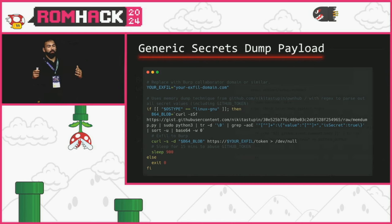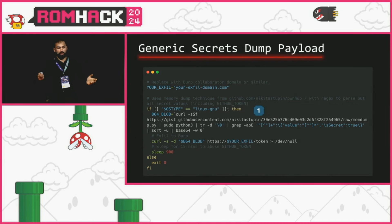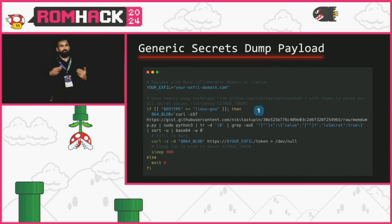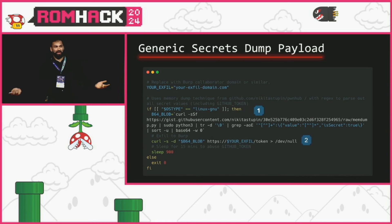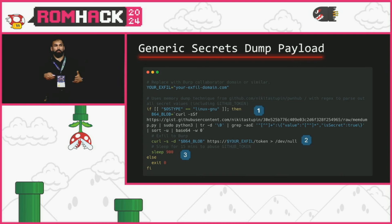This is a payload I've used countless times in proof of concepts. It pulls down a Python script that researcher Nikita Subin wrote, with some grep statements added, base64-encodes it, and sends it to my exfiltration URL. The final thing it does is sleep — this is important because the GitHub token is only valid for the duration of the job, so if I want to do post-exploitation operations with it, I need to extend its lifetime.